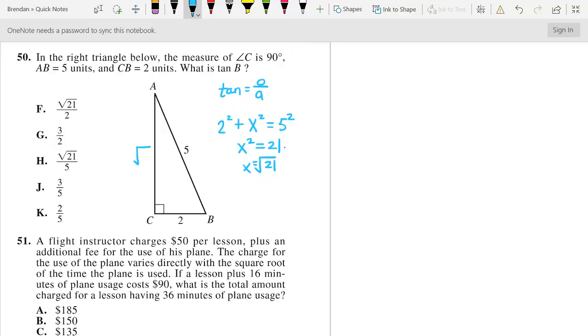Okay, so that equals square root of 21, and then we would get tangent of B equals the square root of 21 over 2. So, that makes the answer F.